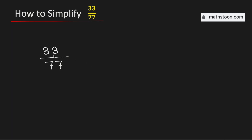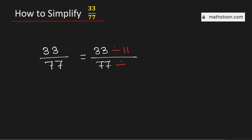In this video let us simplify the fraction 33 over 77 and write it in its simplest form. Both the numbers 33 and 77 are divisible by 11. Therefore to simplify this fraction we will divide both the numerator and the denominator by 11.